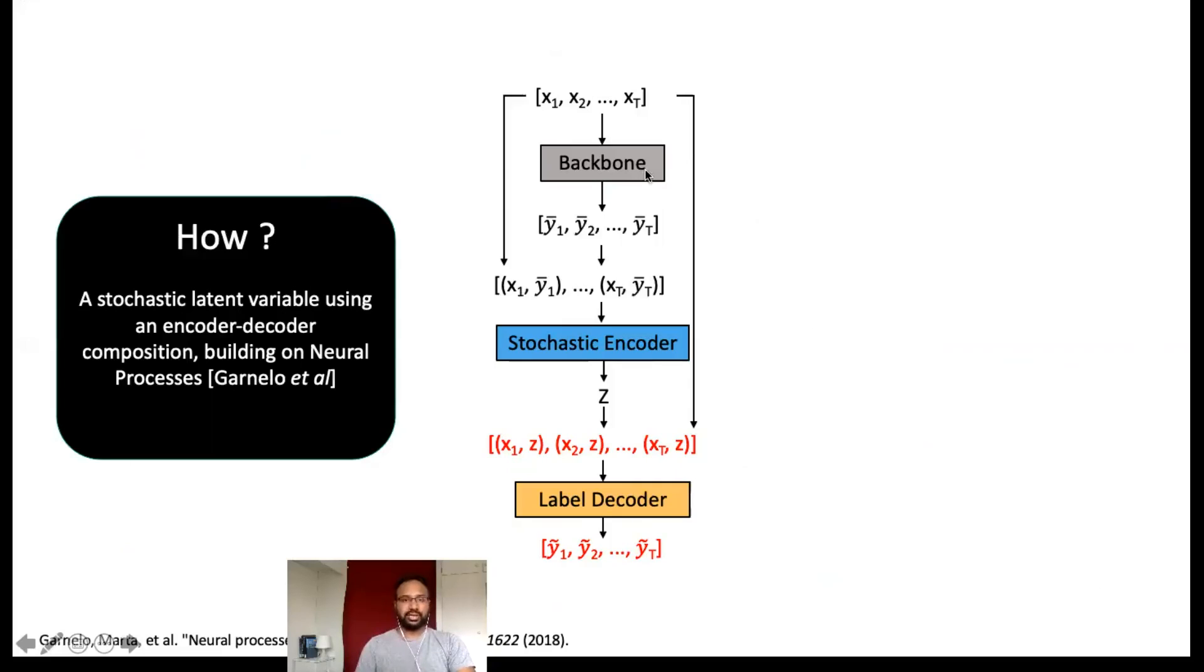The backbone is a simple deterministic regression model that predicts the proxy labels. The encoder module predicts a stochastic latent variable, which is an instantiation of the underlying process which we are aiming to learn. And finally, the decoder predicts the emotion labels in a continuous time span.